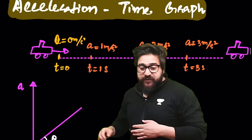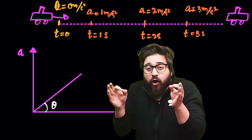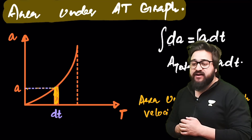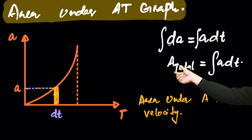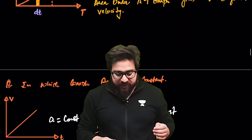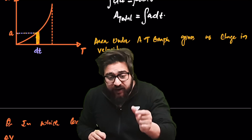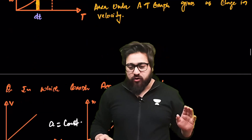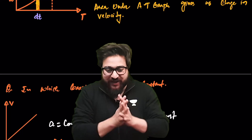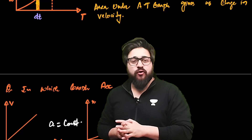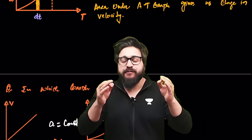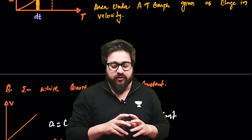The acceleration-time graph: we do not define slope in this case. However, the area under the acceleration-time graph is ∫a dt, which equals change in velocity Δv. So the area under the acceleration-time graph gives change in velocity. That covers all of 1D kinematics — please subscribe to the channel, like the video, and comment below which chapter you want covered next.